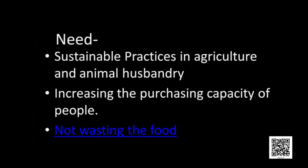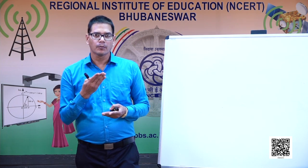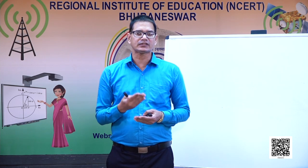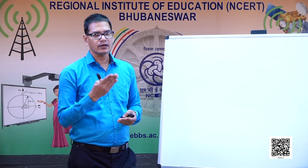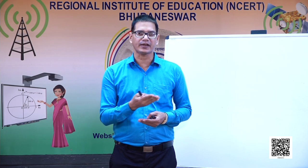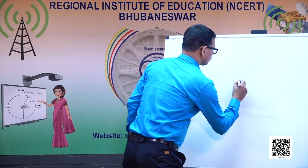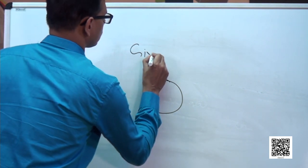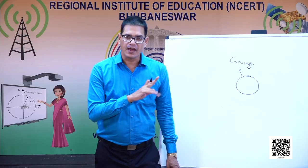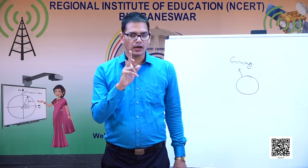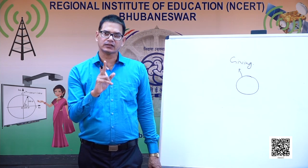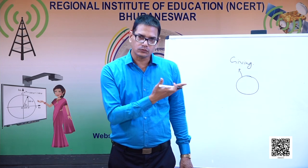We can increase production of crops and animal products, but if people do not have the purchasing capacity, they cannot purchase it. So we also need to increase the purchasing capacity of people through sustainable practices — by giving employment to every person. We cannot leave out or underestimate any group. 'Sabka saath, sabka vikas' — that means we have to grow with all.